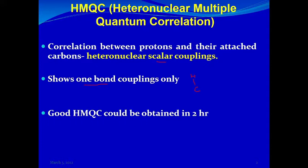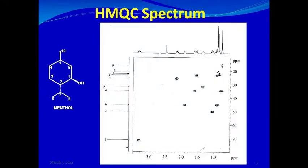Because it involves carbon, which is an insensitive nucleus in NMR, a good HMQC spectrum can be obtained in about two hours. Here is the HMQC spectrum of menthol. As it is a heteronuclear two-dimensional NMR technique, it shows a correlation between proton and carbon, so you will see both the carbon-13 and the proton scales in the HMQC spectrum.